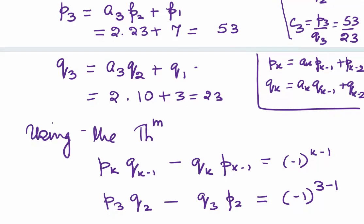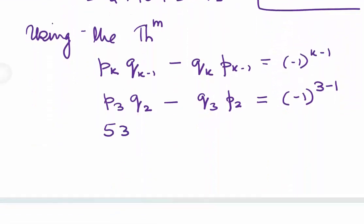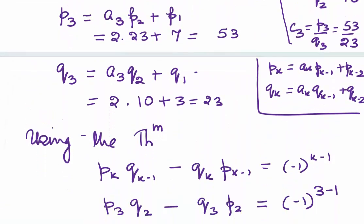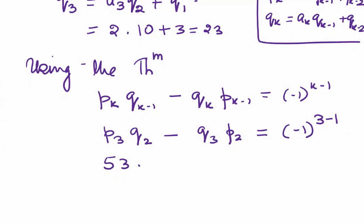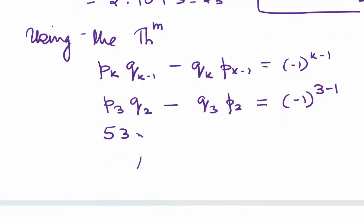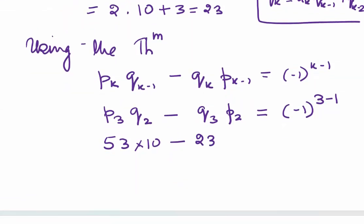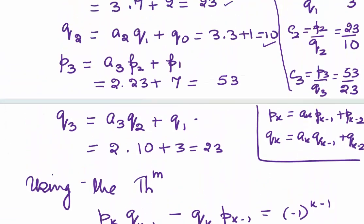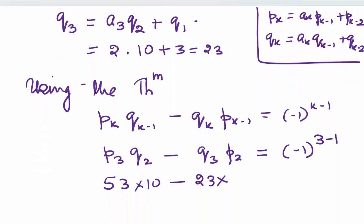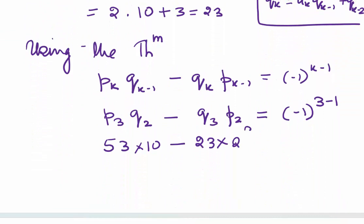What is P3 for us? P3 is 53. What is Q2? Q2 was 10, so this is multiplied by 10 minus Q3, which was 23, multiplied by P2, which was 23. This equals (-1)^2. We get 53·10 - 23·23 = 1.